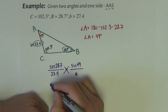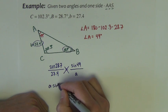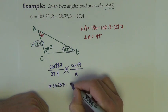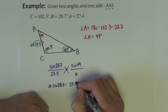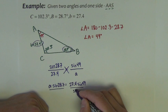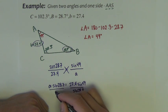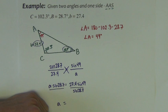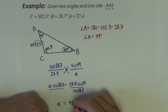We cross multiply, because this is a proportion. So we have a times the sine 28.7 equals 27.4 sine of 49. We'll divide by the sine 28.7. And this is all calculator work from here. You've got to make sure that your calculator is in degree mode for this problem. And I get little a to be 43.1.